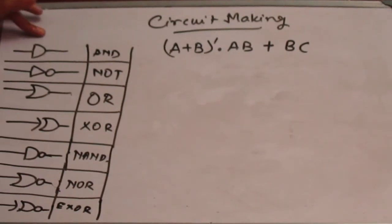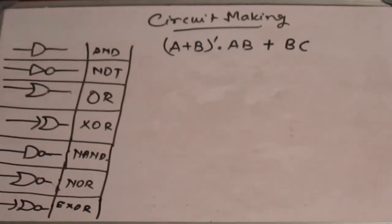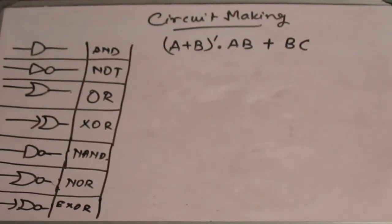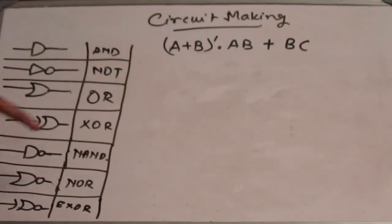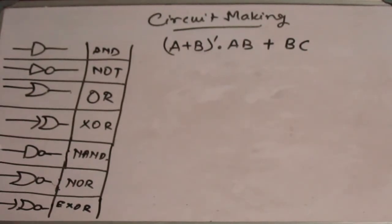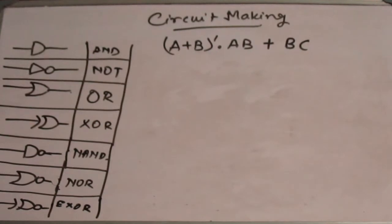This represents the AND gate, this is the NOT gate, this is the OR gate, XOR gate, NAND gate, NOR gate, and exclusive OR. This NAND gate and NOR gate are called universal gates because using these two we can make any possible gate.